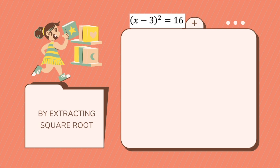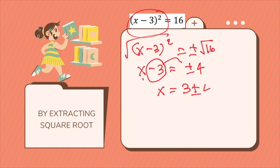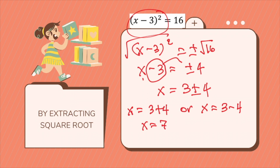Let's have this as our last and final example. Since that's a square, you just need to take the square root of both sides: plus or minus square root of 16, giving x minus 3 equals plus or minus 4. Then transfer minus 3 to the other side: x equals positive 3 plus or minus 4. Therefore, x equals 3 plus 4, or x equals 3 minus 4. So x equals 7, or x equals negative 1.